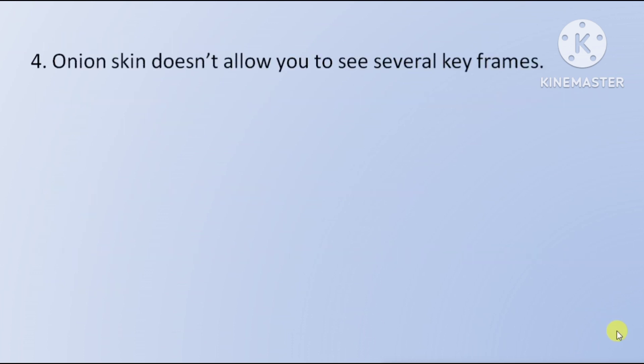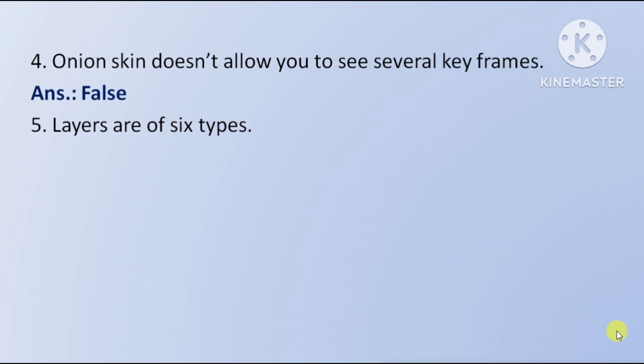Next question: onion skin does not allow you to see several key frames — ye false hai. Next question: layers are of six types — ye bhi false hai, kyunki layers four types ke hote hain.